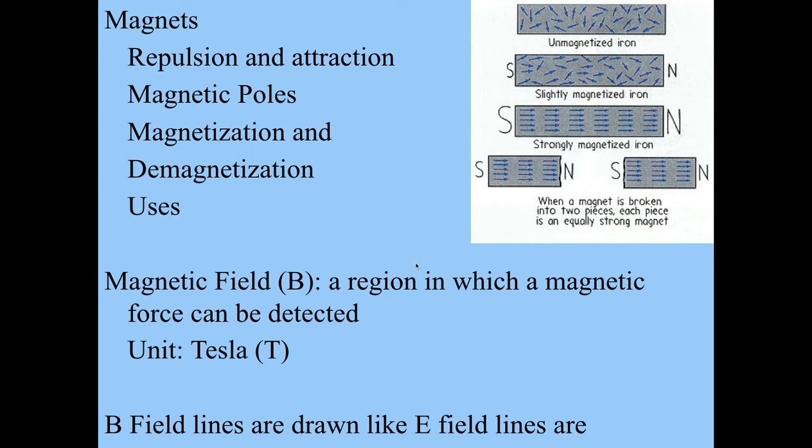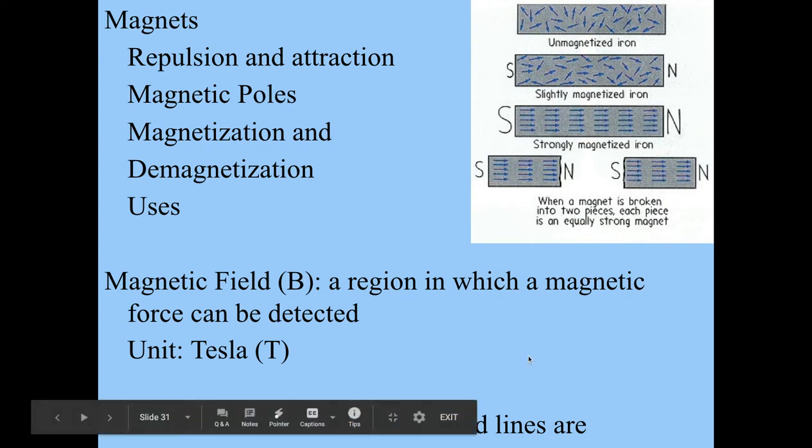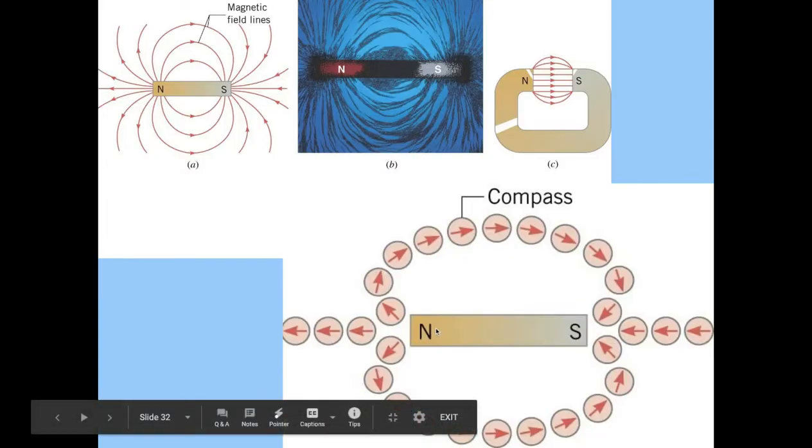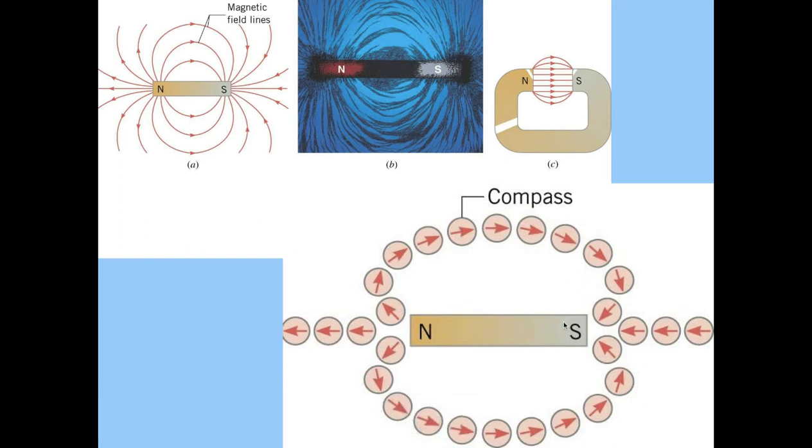So magnetic fields are going to be, B is going to be the symbol for magnetic field, and it's measured in Tesla. And then we're going to have field lines a lot like we did for electrostatics. So moving forward with those. The biggest thing to remember here is that the lines go from north to south, just like they went from positive to negative. So here I go from north to south here.